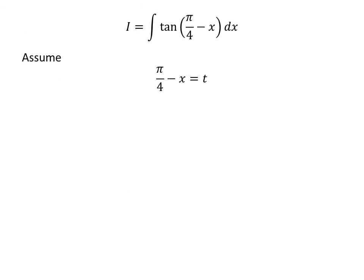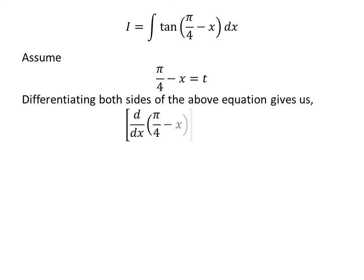Let us apply the substitution method. Assume pi upon 4 minus x is equal to t. Taking the differential of both sides, the derivative of pi upon 4 minus x with respect to x times differential of x equals differential of t. Since the derivative of the constant pi upon 4 is 0 and derivative of x is 1, minus differential of x equals differential of t, so differential of x equals minus differential of t.